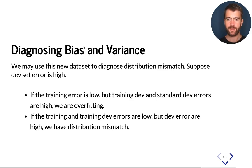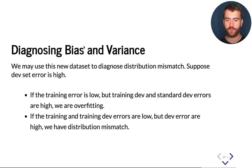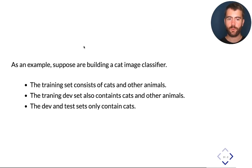We don't generalize to the training-dev or to the standard development sets — this is a classical example of variance or overfitting. But if both the training and training-dev errors are low but the development error is high, then we generalize to the training-dev set but not to the standard development set, which means our standard development set is too different from the training set.